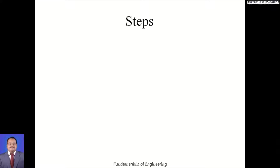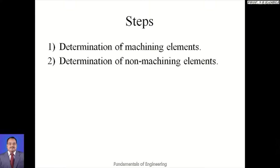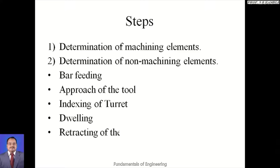To calculate all these things we follow certain steps. The first step is determination of machining elements — those elements which actually produce chips. We list down all the machining processes to get the final product. Then we determine non-machining elements, which do not produce chips but support the machining elements. Non-machining elements include bar feeding, approach of the tool, indexing of the turret, dwelling, and retracting of the tools.